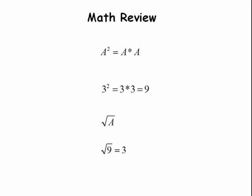We begin with a math review. a squared is a times a. For example, 3 squared equals 3 times 3, which equals 9. The inverse of that is the square root of a. If a is equal to 9, then the square root of 9 is 3.